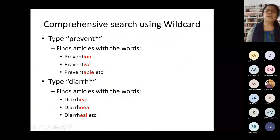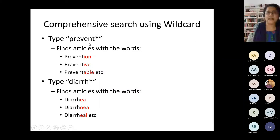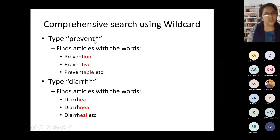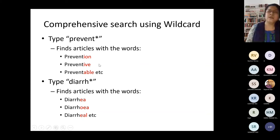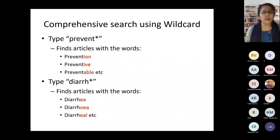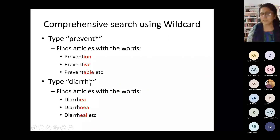Another very important thing is a comprehensive search using wildcards. There are a number of words like prevention, preventive, preventable. If you are just typing 'prevention,' you may be avoiding 'preventive' and other terms starting with the same root. For that, write the initial part of the word — 'prevent' — which is common for all, then put an asterisk and put them in inverted commas. PubMed will understand that you are searching for words starting with 'prevent' and will consider all such words. This also helps with spelling variations — for example, 'diarrhea' can have American or British spellings. So use the initial common part, add an asterisk, and put it in inverted commas to include all word variations.